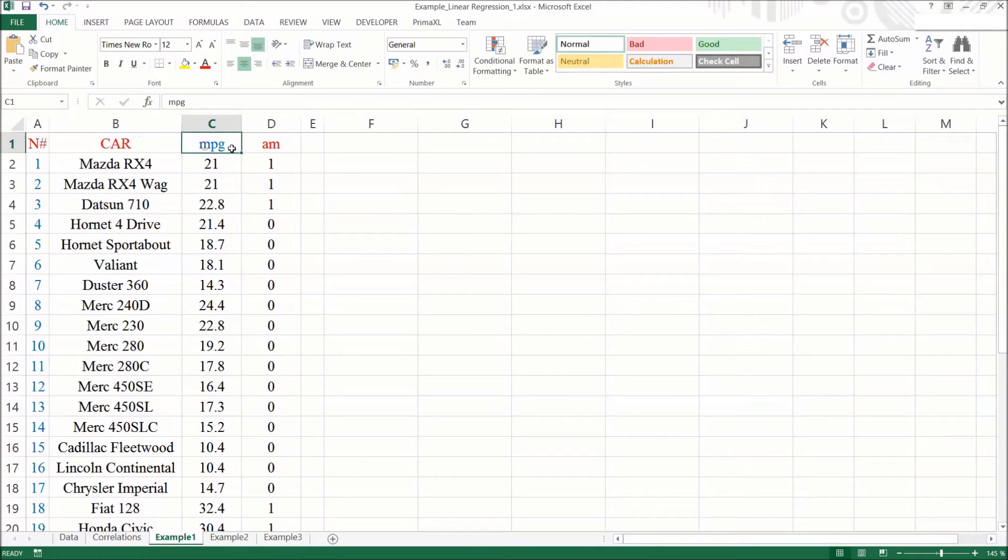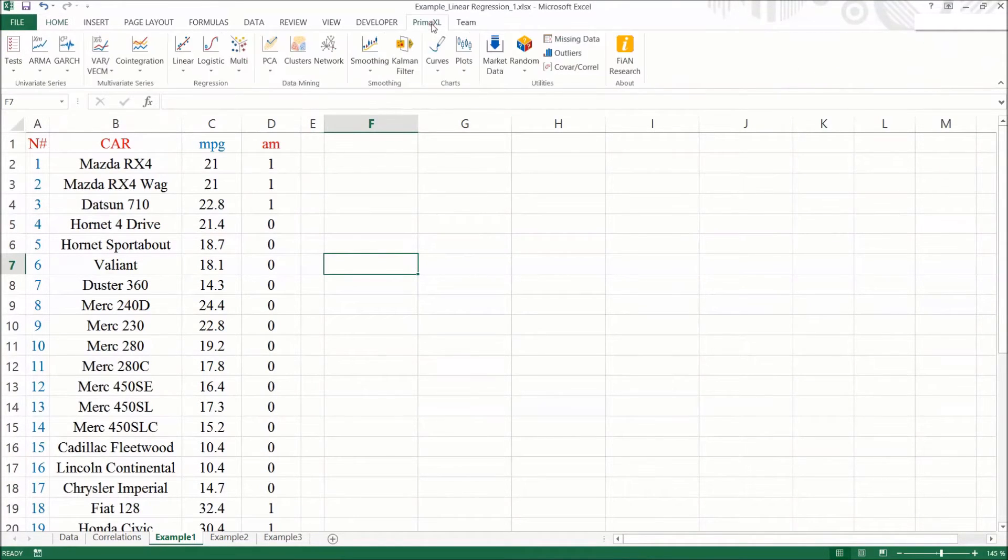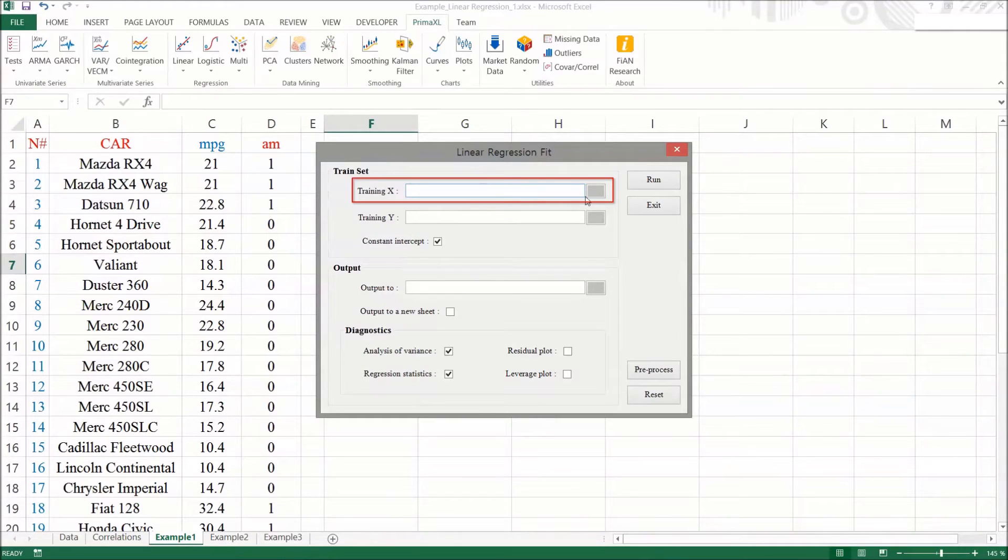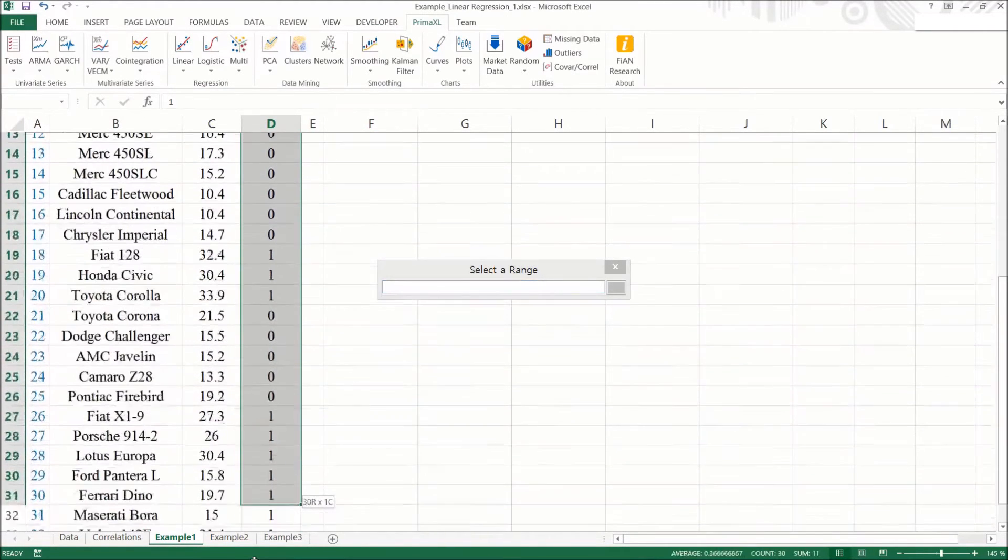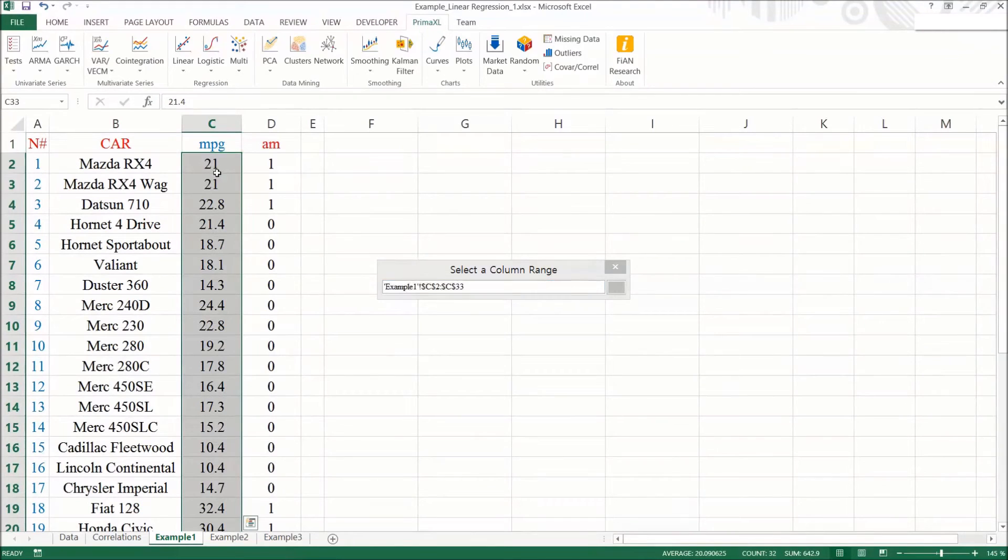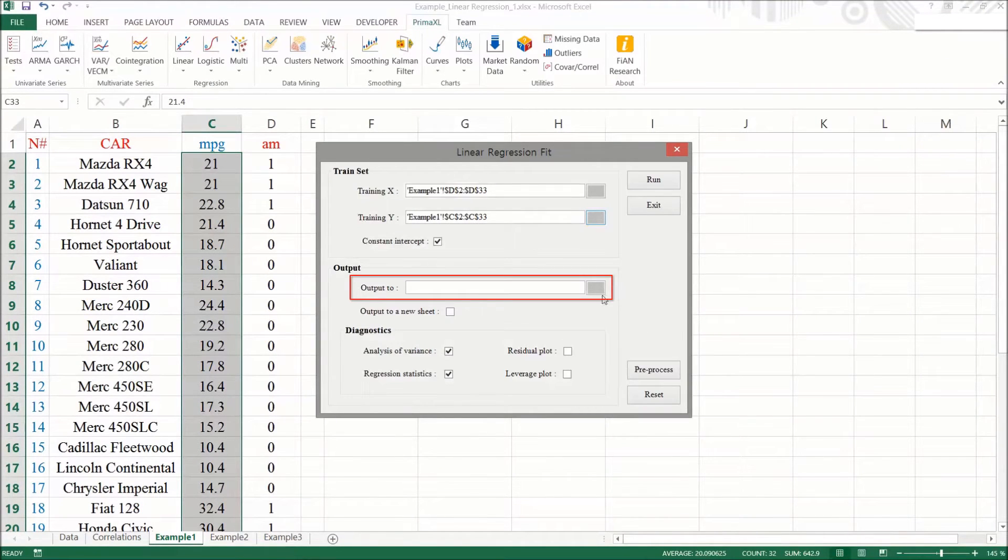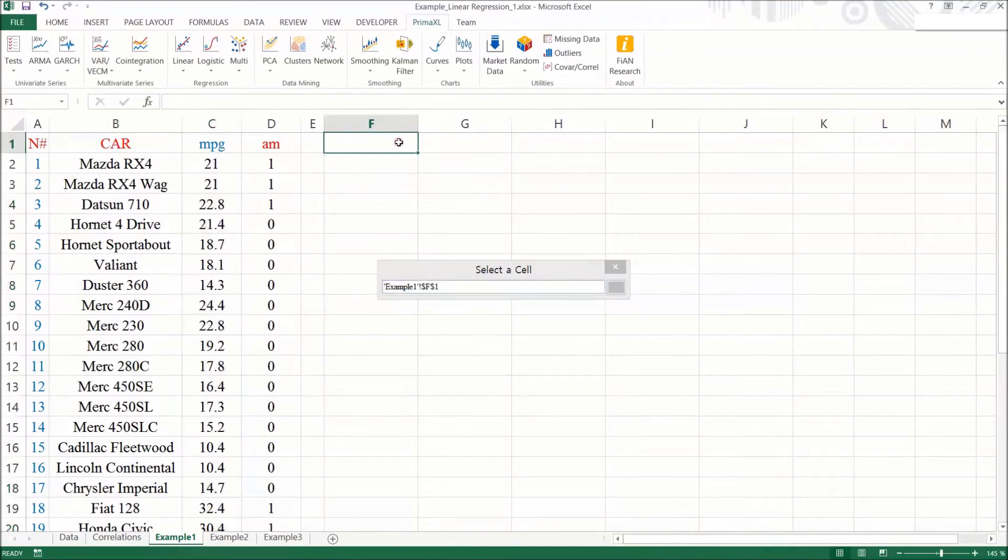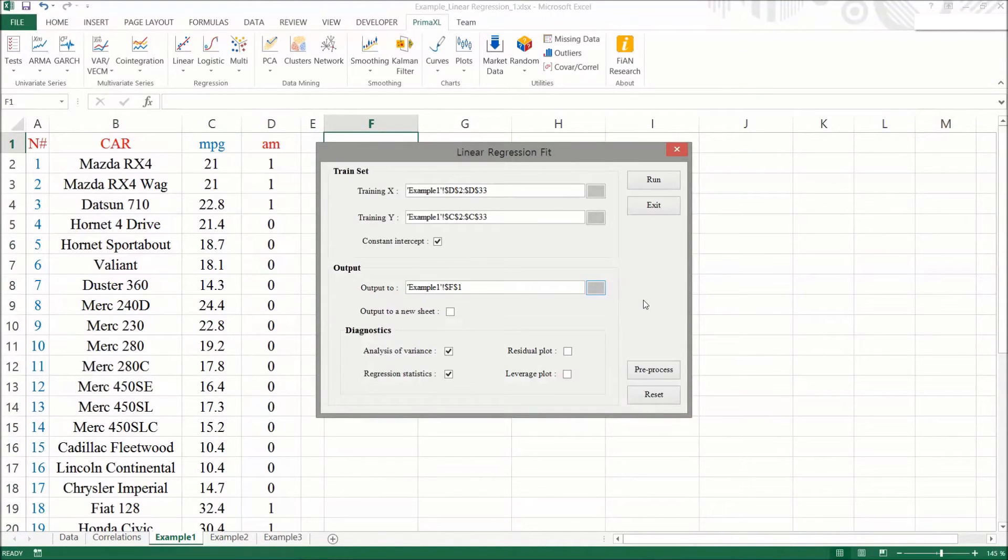We have a simplified data table with only the columns that we are going to use. We go to the PMExcel tab, select linear and then fit. We select the set range for the X variable. Then, we select the set range for the Y variable. Finally, we specify the output location. For the time being, we uncheck these boxes. We'll return to them in the future video. Now, we press the run button to execute.